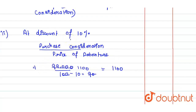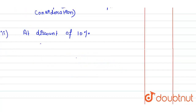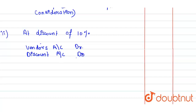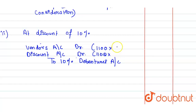This is our working note — please note it below. The entry will be: Vendor's Account debit, Debenture Discount Account debit, to 11% Debentures Account. We have 1,100 debentures at face value Rs. 100, with 10% discount at Rs. 90 price. Adding the values, total is Rs. 1,10,000.